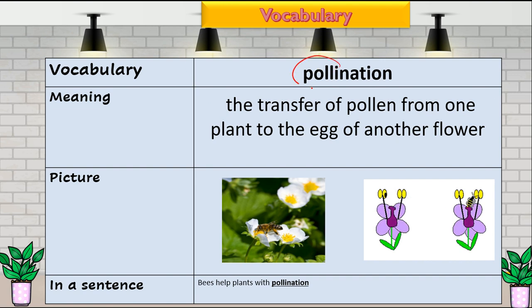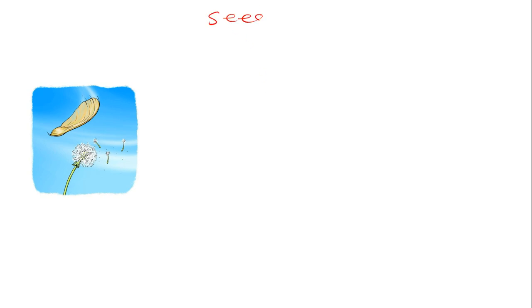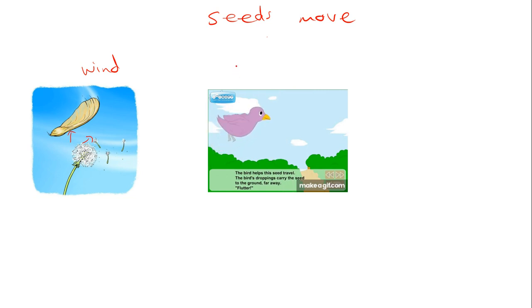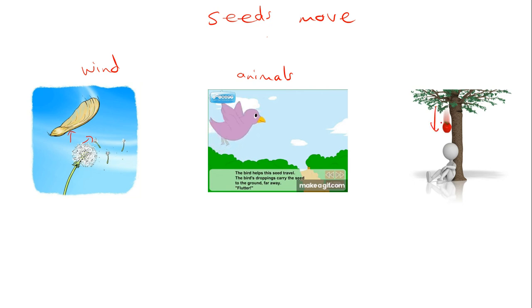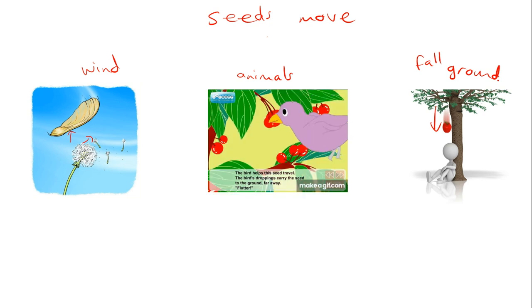So what is pollination? It is the transfer of pollen. Now let's talk about how seeds move. Seeds can move from place to place — whether from a flower or a cone, they can be blown by the wind, moved by animals that eat them and drop them in a new place, or they can just fall to the ground. These are ways that seeds can move.